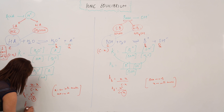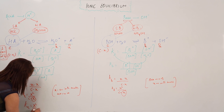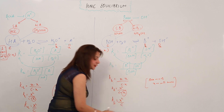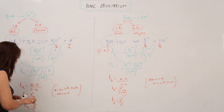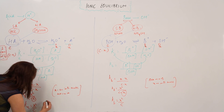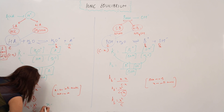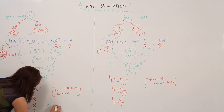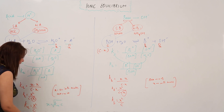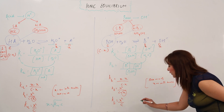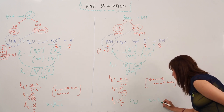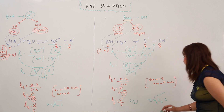What I am left with: Ka = X² / C. Similarly, Kb = X² / C. By rearranging them, the X — which indicates the concentration of products — gives X = √(Ka × C). Similarly, for the base, X = √(Kb × C).